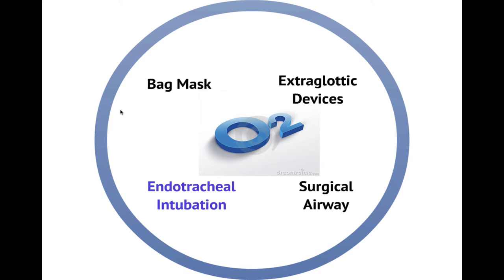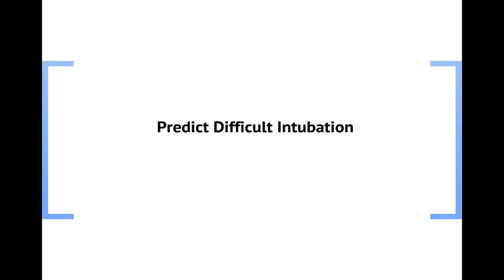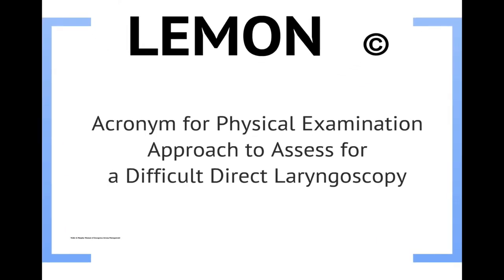Let's take a look at endotracheal intubation — the overview, the introduction to assessing the patient — and we're going to introduce a new mnemonic we can utilize to predict difficult intubation. Predicting difficult intubation is probably something you should concern yourself greatly with. We really want to look at our patient before we ever get a laryngoscope and blade out, and before we put that blade down into the patient's throat, we should have a good idea whether we'll be successful and have a plan to increase our odds. The LEMON mnemonic is an acronym we can use for physical examination to assess for difficult intubation.